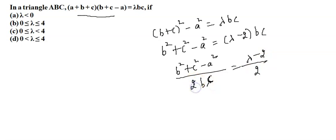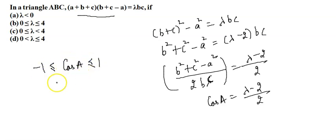Now this is nothing but cos A. Cos A is equal to lambda minus 2 by 2.